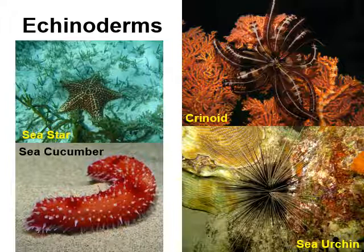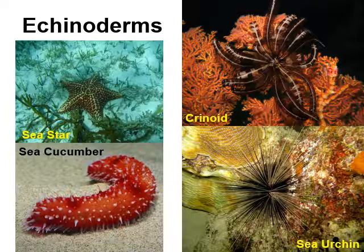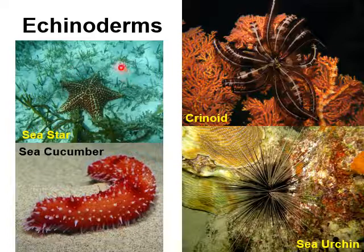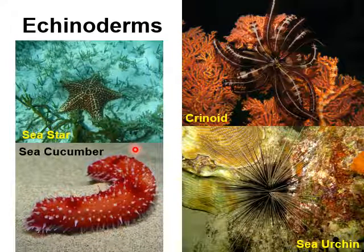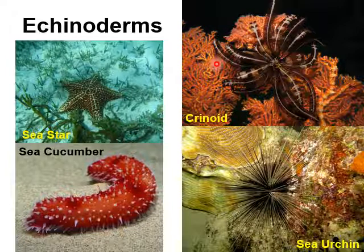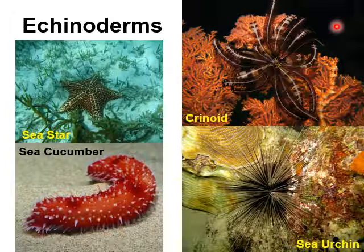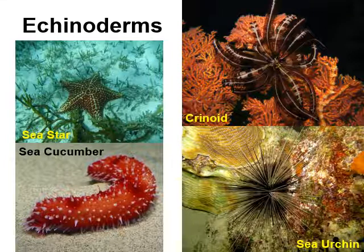Echinoderms include four main groups that differ mostly in how they feed. Sea stars are carnivores that eat animals off the sea floor. Sea cucumbers are deposit feeders that eat small dead particles off the sea floor like little vacuum cleaners. Sea urchins are herbivores that scrape algae off surfaces. Crinoids are filter feeders that use feathery appendages to trap small particles drifting by in the water.